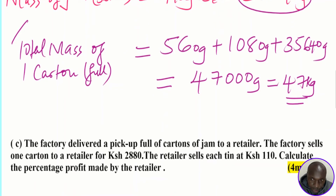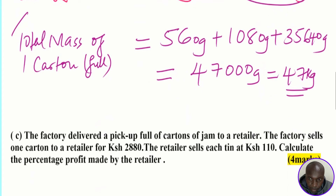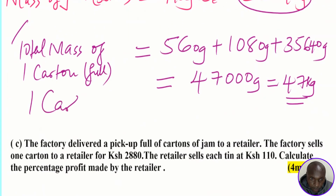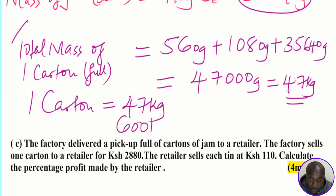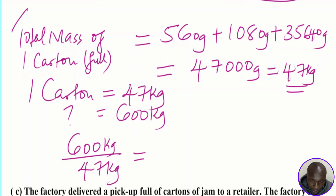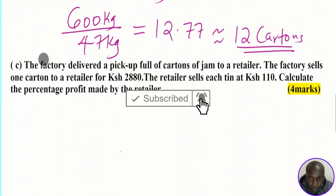Having found that one full carton weighs 47 kg, and the pickup can carry a maximum of 600 kg, we divide: 600 ÷ 47 = 12.77. Since we cannot carry a partial carton, we round downwards. Therefore, the maximum number of cartons the pickup can carry is 12 cartons.